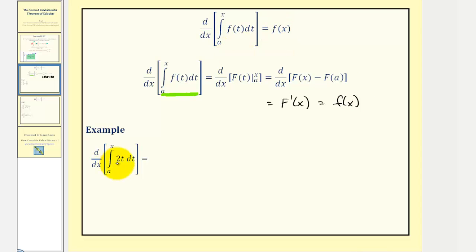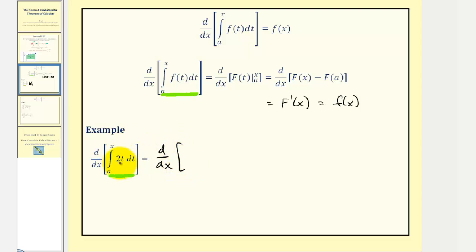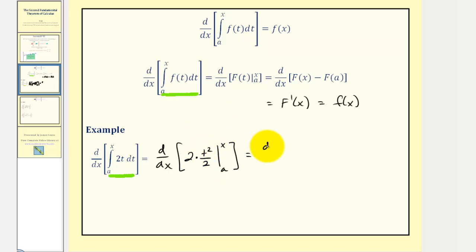Let's try this with a simple integral. Before we take the shortcut given by the theorem, let's look at this the long way and first evaluate the definite integral. So we'd have the derivative with respect to x of the antiderivative of two t, which is two times t squared divided by two — this simplifies to t squared. We evaluate t squared at x then a and find the difference.